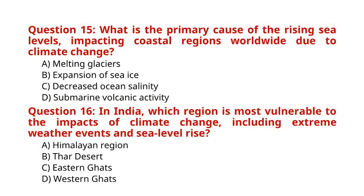Question 15: What is the primary cause of rising sea levels impacting coastal regions worldwide due to climate change? A. Melting glaciers. B. Expansion of sea ice. C. Decreased ocean salinity. D. Submarine volcanic activity. The correct answer to Question 15 is option A: Melting glaciers. Question 16: In India, which region is most vulnerable to the impacts of climate change, including extreme weather events and sea level rise? A. Himalayan region. B. Thal Desert. C. Eastern Ghats. D. Western Ghats. The correct answer to Question 16 is option A: Himalayan region.